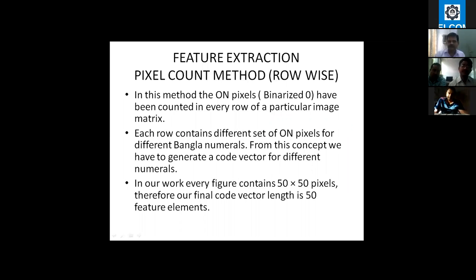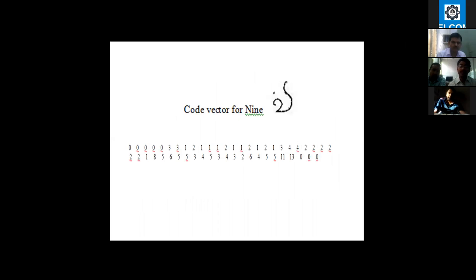We now come to feature extraction, under which various methods are proposed. The first is the pixel count method, applied row-wise. We have a binary image matrix containing ones and zeros, where zeros represent the 'on' pixels. By this method we count the number of on pixels in every row. For Bangla numeral 9, we get feature vectors showing that in the initial five rows there are no on pixels, but in the sixth row we have three on pixels. For different numerals this data will not be common, so these serve as discriminating features for classification.